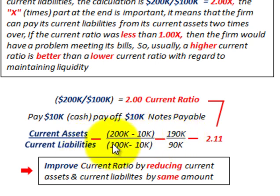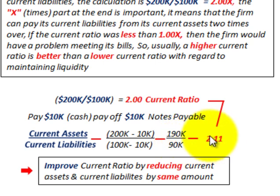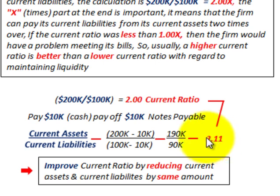Our current liabilities of $100,000 are also reduced by $10,000 because the notes payable was paid off with that cash. So simple division gives us a new current ratio of 2.11 — improved from 2.00. You improve the current ratio by reducing current assets and current liabilities by the same amount, assuming your current assets are greater than your current liabilities.